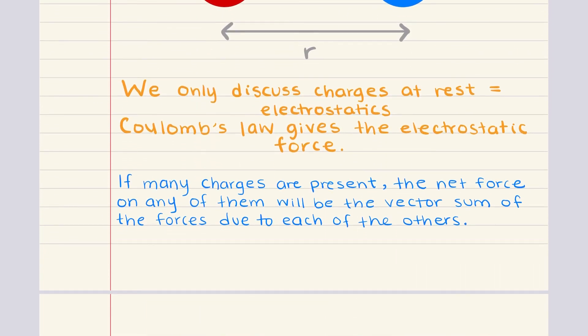But what if there's more than two charges? Well, Coulomb's law still holds, but we have to extend our approach. When multiple charges are present, the net electrostatic force on any one charge is going to be the vector sum of the forces exerted by each of the other charges. This means we calculate the force between each pair of charges individually and then sum them, keeping in mind both the magnitudes and directions of the forces involved.